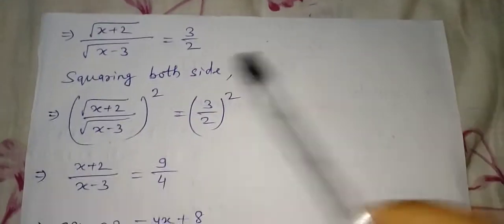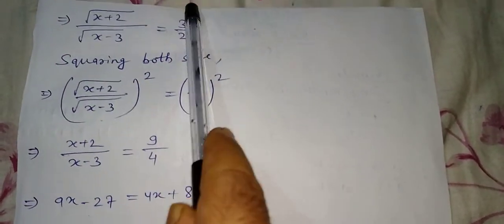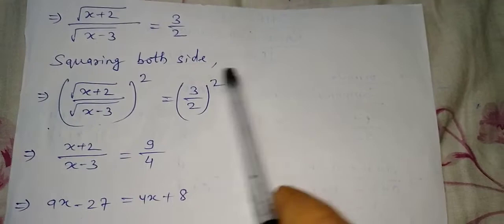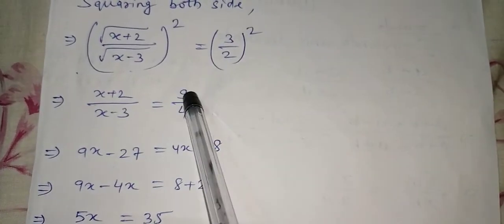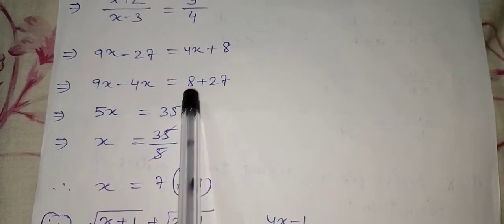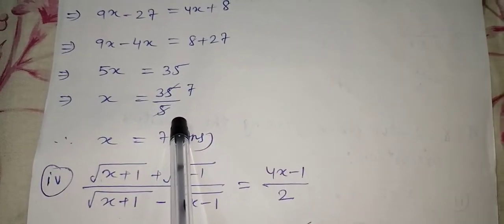To find the value of x, the square roots must vanish, so we square both sides. Squaring removes the root, leaving (x+2) and (x-3). Square of 3 is 9 and square of 2 is 4. Now we cross multiply: 9(x - 3) = 4(x + 2), giving 9x - 27 = 4x + 8. Bringing x terms to one side: 9x - 4x = 5x, and 8 + 27 = 35. So x = 35/5 = 7.